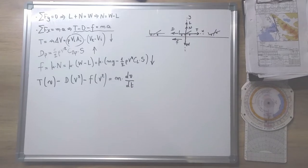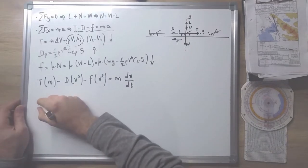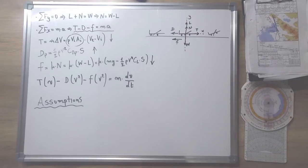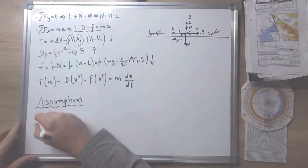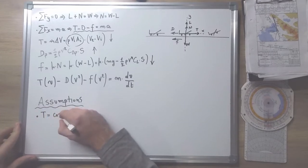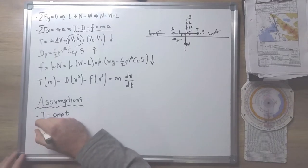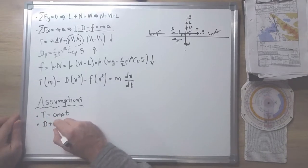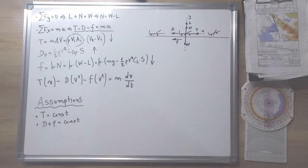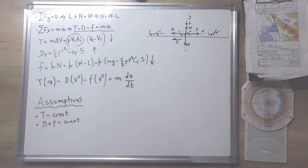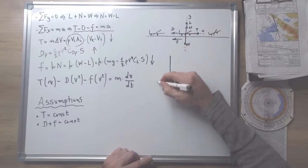But in order to simplify the situation, I will make some assumptions that could be realistic under certain circumstances. Assumption A: I assume that the thrust is more or less constant during the take-off. And assumption B: I will assume that the sum of the resistance forces — the parasite drag force and friction — is also constant. With these two assumptions, the aircraft acceleration will also be constant, and we can calculate it either from the constant acceleration motion formulas or from the work-energy theorem.